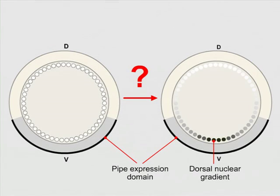This sequence of events poses an intriguing question. How is the initially uniform pipe signal converted into a graded outcome of dorsal nuclear localization? We describe a mechanism termed self-organized shuttling that can account for this transition.